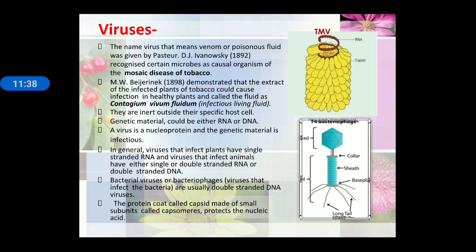Viruses: the name was proposed on the poisonous fluid and was given by Pasteur; first recognized in plants. Mayer termed viruses as organisms that release an infectious living fluid — contagium vivum fluidum. They are inert outside the cells: if present outside the animal body they are non-living, and if present inside the body they are living. Viruses contain genetic material — either RNA or DNA — and may be single-stranded or double-stranded. Viruses contain a protein coat known as capsid, formed of small subunits known as capsomeres.